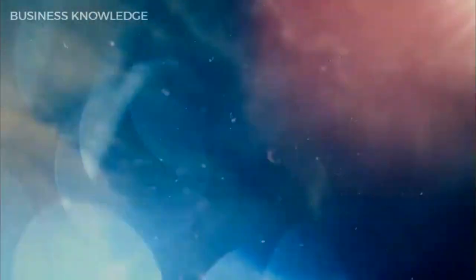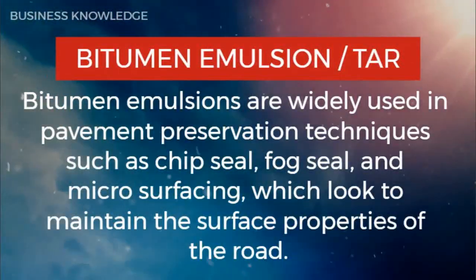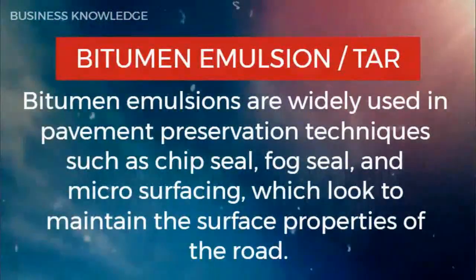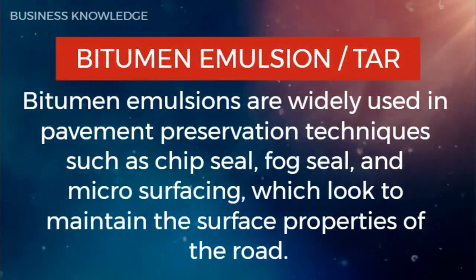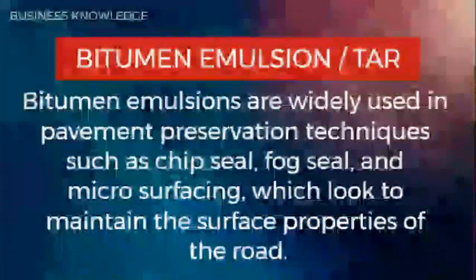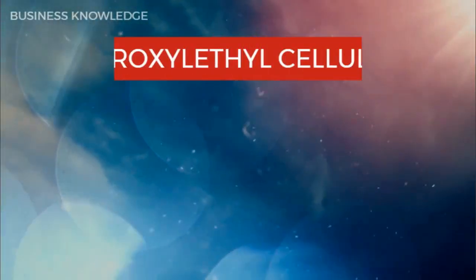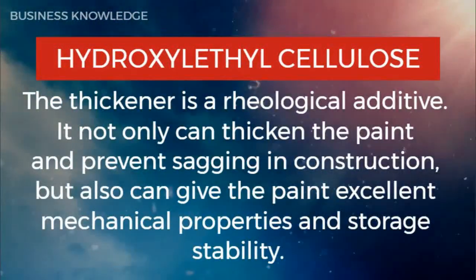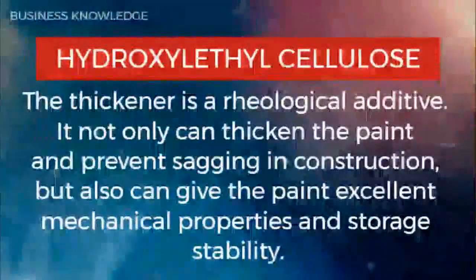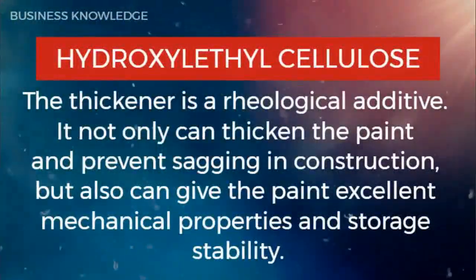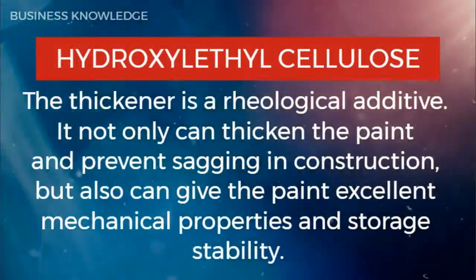Bitumen emulsions are widely used in pavement preservation techniques such as chip seal, fog seal, and micro surfacing, which help maintain the surface properties of the road. Hydroxyethyl cellulose (HEC), the thickener, is a rheological additive — it not only thickens the paint and prevents sagging during construction, but also gives the paint excellent mechanical properties and storage stability.